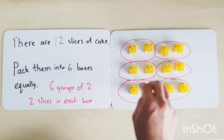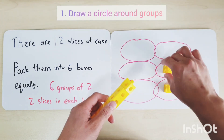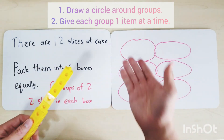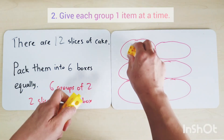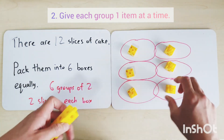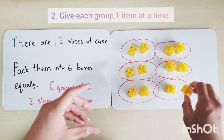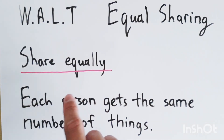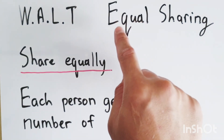So there are two methods of separating equally. First, you can do it visually. Another way is to give each box one at a time - 12 slices of cake into six boxes, one by one into each. After these examples, we have learned about sharing equally, where each person gets the same number of things, also known as equal sharing.